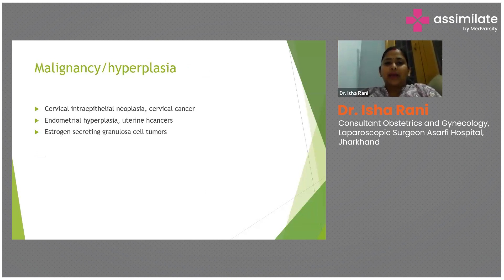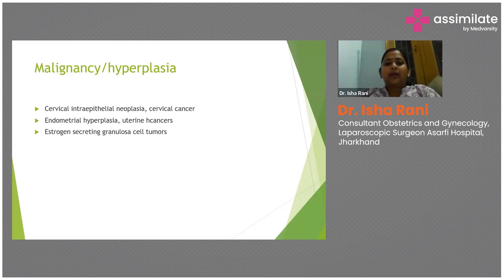M is malignancy or hyperplasia — a broad term for any malignancy leading to menorrhagia. It could be cervical cancer or CIN, endometrial hyperplasia, uterine cancer, or even ovarian granulosa cell tumor, which is an estrogen-secreting tumor presenting as menorrhagia.